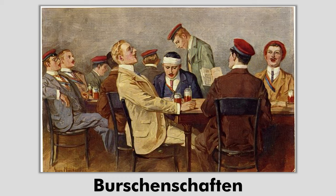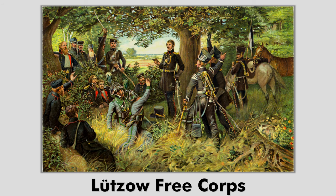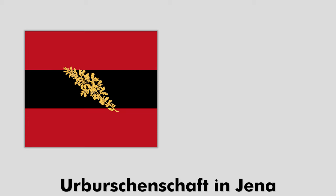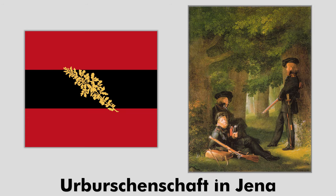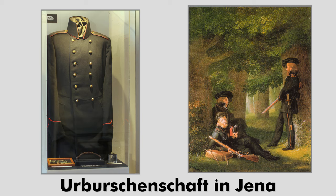In the 19th century, student fraternities called Burschenschaften were founded, inspired by liberal and patriotic ideas and the unification of the German fatherland. The very first one, called the Urburschenschaften, was founded in Jena by war veterans of the Lützow Free Corps. They adopted a flag with black, red and gold, following the colors of the uniforms of the Free Corps — a black fabric, red piping and gold buttons.